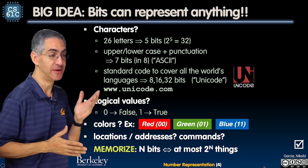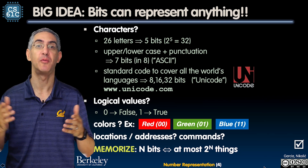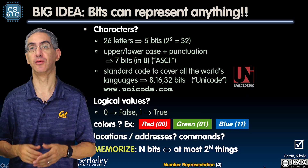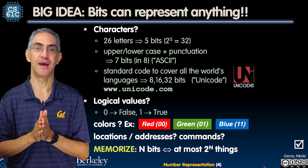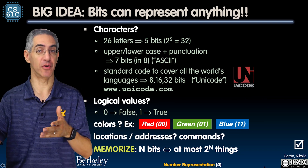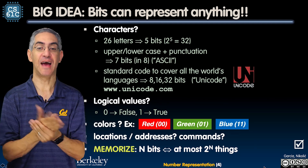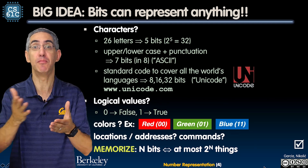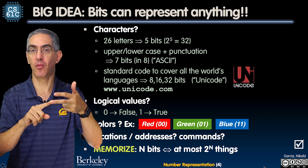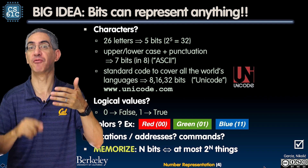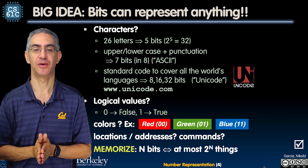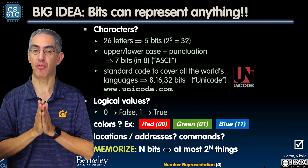You can represent logical values: zero is false, one is true — that's a common way we do that. For colors, here's RGB — red, green, and blue: zero-zero is red, zero-one is green, one-one is blue. You can also represent locations, addresses, commands, and even emotions — happy is zero-zero, kind of grumpy is zero-one. Anything you can itemize, you can digitize.